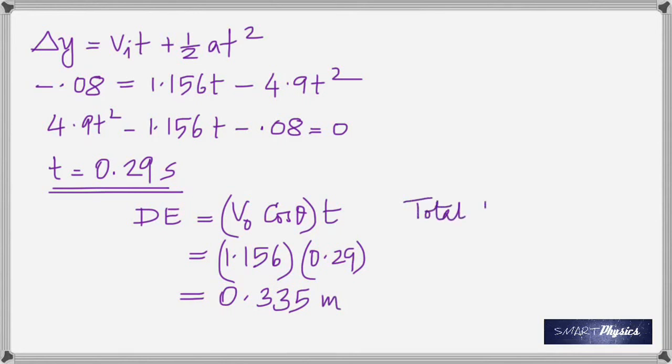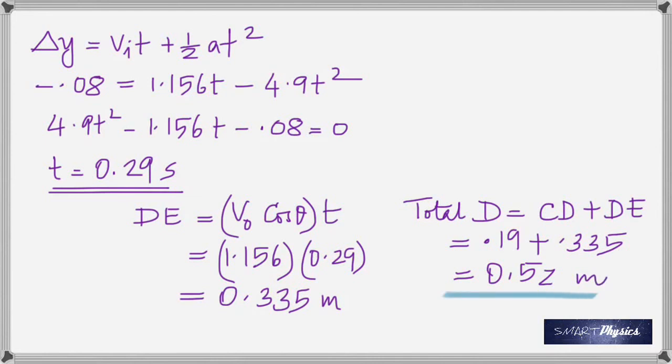Now to get the total distance, you need to add CD with DE. We know that CD is 0.19 meters, so you add that to 0.335, which gives 0.52 meters.